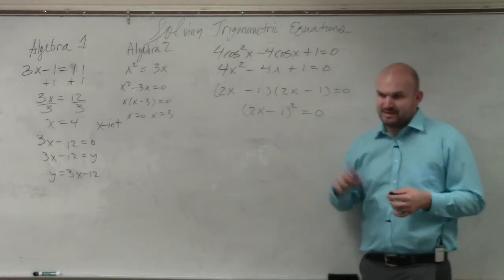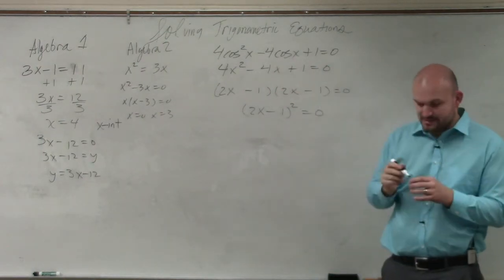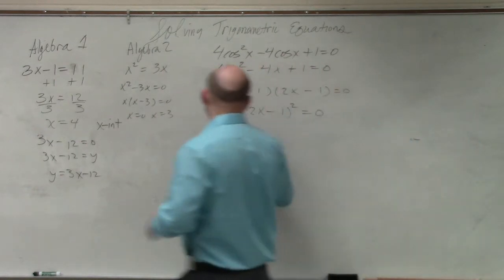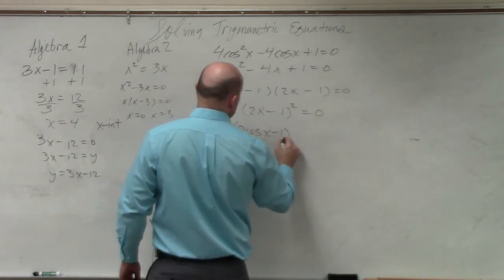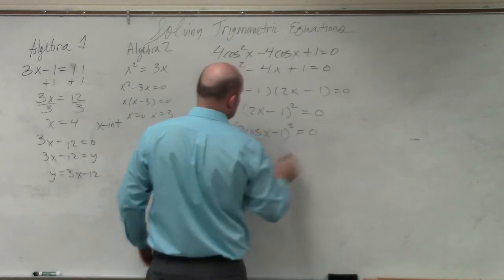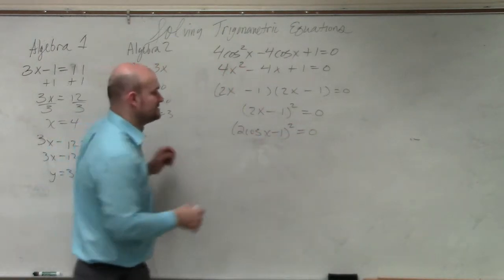But we're obviously not factoring with x's. We're factoring with cosines. So therefore, I will write this as 2 cosine of x minus 1 squared equals 0. Now, ladies and gentlemen, I need to solve.